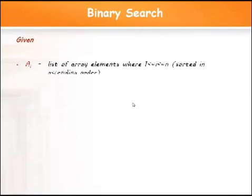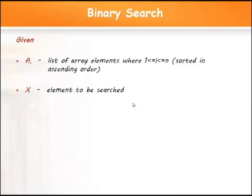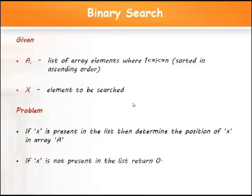To perform binary search, we require a list of elements arranged in ascending order and an element to be searched. We assume A is an array of elements arranged in ascending order, with index starting from 1 and ending with N, and let X be the element to be searched. The problem states: search for X in array A. If X is found, return its exact position; if not found, return 0.